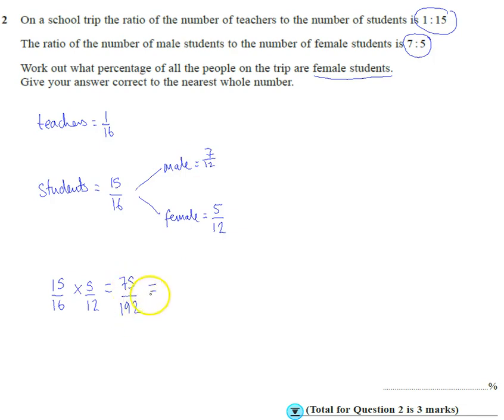The top divided by the bottom, we get a fraction which is 0.390625. When we convert to a percentage, times by 100, we get 39.0625%. So to the nearest whole number, it's 39% of female students.